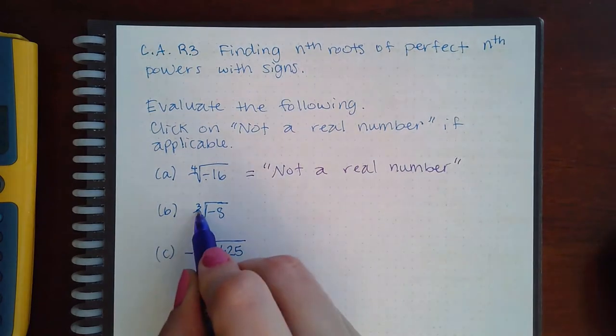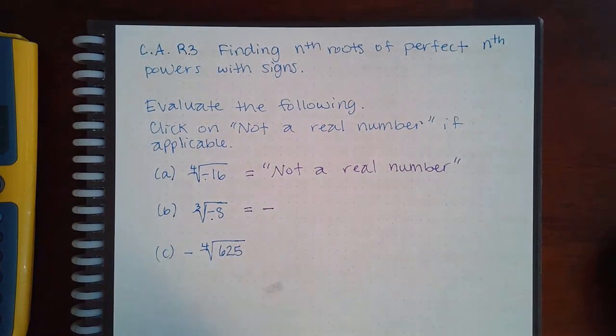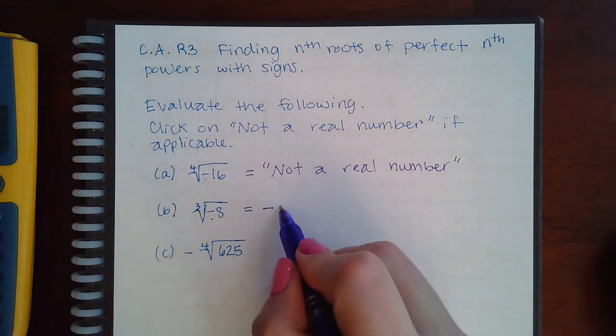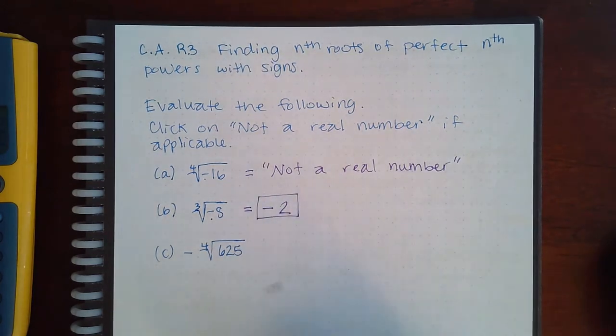But if the index is odd and the value is negative, it just means your answer will be negative. For example, what number cubed gives me 8? Two cubed gives me 8, so my complete answer is negative 2.